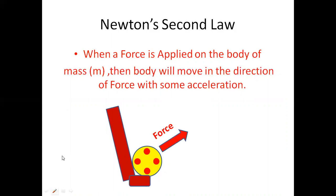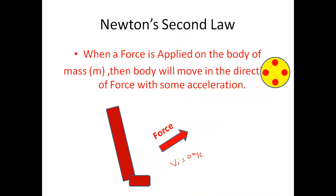Initially the velocity was zero, that means vi was zero. As soon as he kicks it, the ball starts moving and has some final velocity vf. In this time there was an acceleration because the velocity changed, so the body accelerated in the same direction as that of the force.